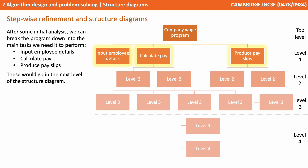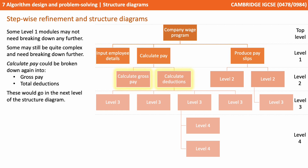These will all go in the next level of the structure diagram. Some of the level one modules may not need breaking down any further, whereas some others may still be quite complex and need breaking down further. Calculate pay, for example, could be broken down into gross pay and gross deductions. These would go into the next level of the structure diagram.